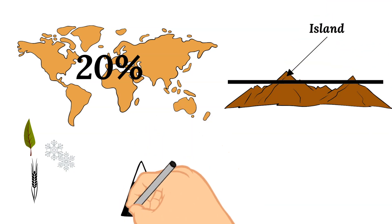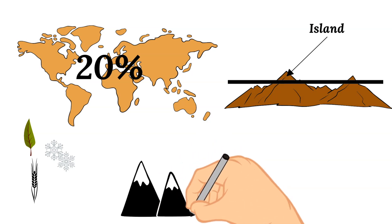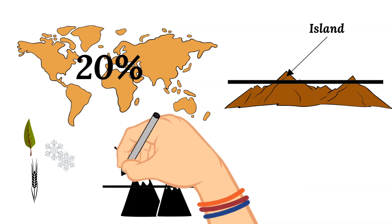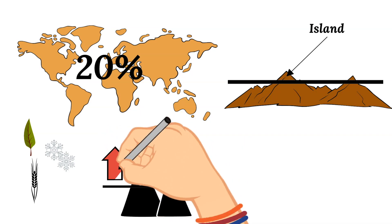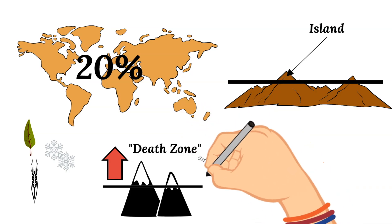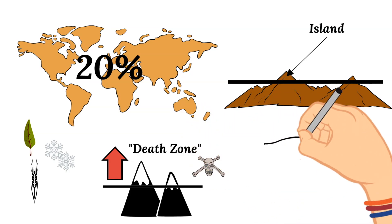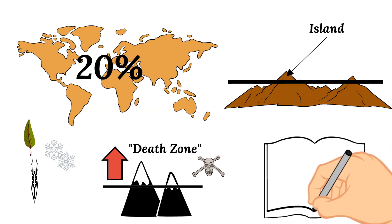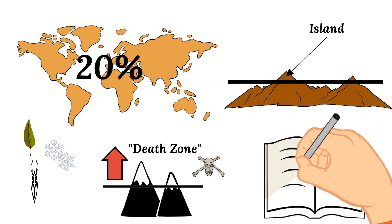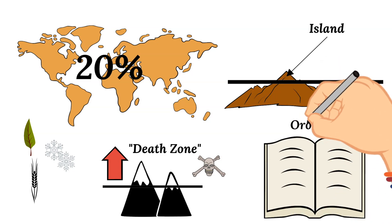Another fact about mountains is that above 26,000 feet, this is called the death zone. The reason it's called the death zone is because there's not enough oxygen to support life. And lastly, there are scientists who specifically study mountains, and this field of science is called orology.